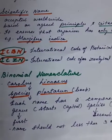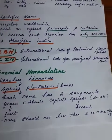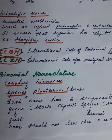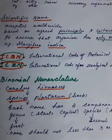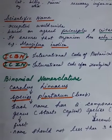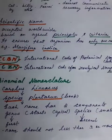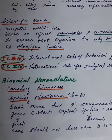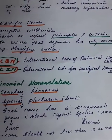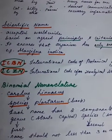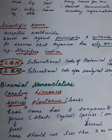The next one is the scientific name. The scientific name is accepted worldwide. Scientists have named organisms based on agreed principles and criteria. The scientific name ensures that an organism has only one name — for example, the scientific name of mango is Mangifera indica. The ICBN (International Code for Botanical Nomenclature) gives scientific names to plants, and the ICZN (International Code for Zoological Nomenclature) gives scientific names to animals.